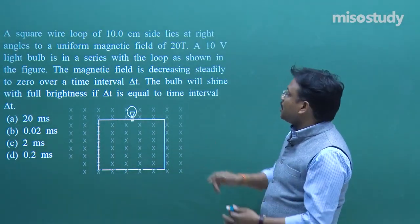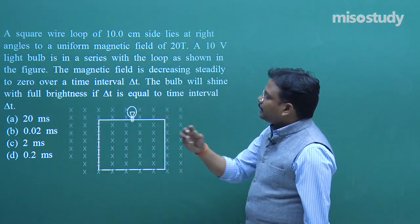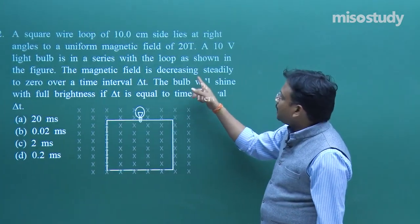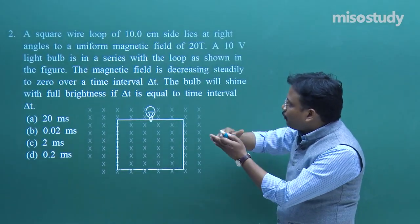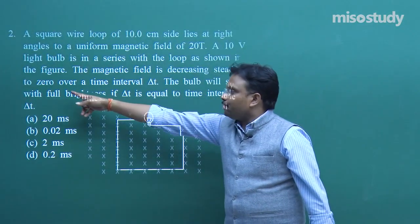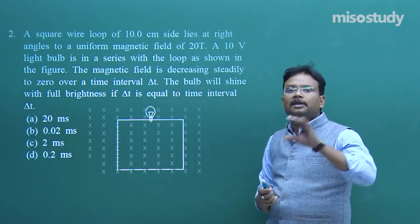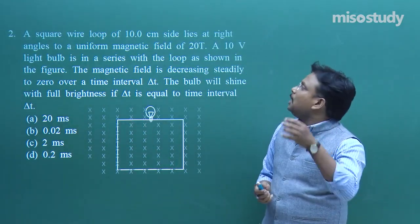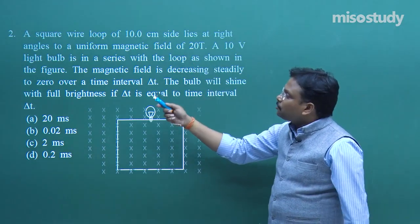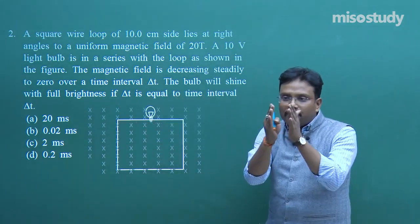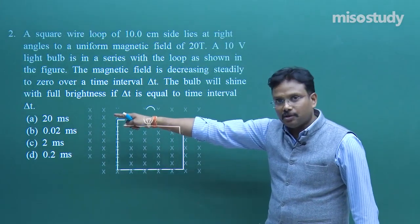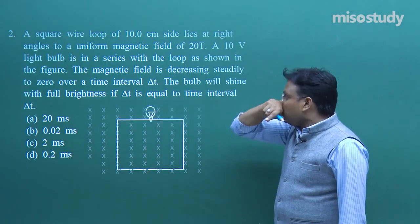Initially the value of B was 20 tesla as given, and it reaches zero in a very short duration. You have to find that short duration Δt. The problem is simple — we are going to use the same EMF formula as in question 1.